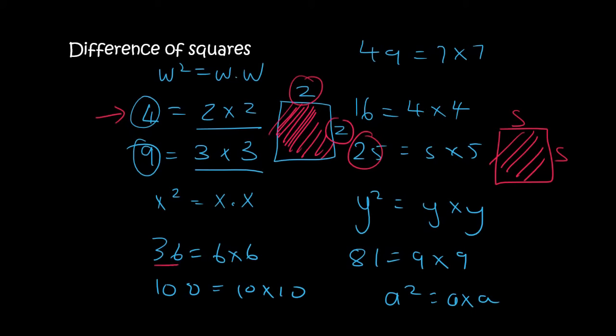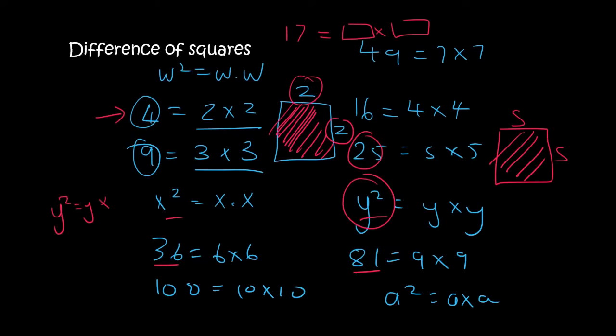You need to become very familiar with these square numbers. For example, the number 17 is not a square number because there is no number you can multiply with itself and get 17. So take a mental picture: square numbers, you must know them, and you must also be able to recognize letters that are squared — for example, y squared is the same as y times y.